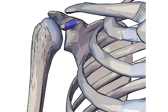As you can see highlighted in blue, the insertion of the pectoralis minor muscle is on the coracoid process of the scapula. The scapula is just behind the ribs — this big flat bone — and the coracoid process is the bone sticking out of the scapula right here. The pectoralis minor inserts on the medial border and superior surface of this coracoid process.